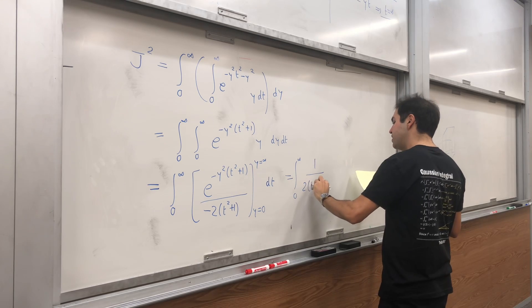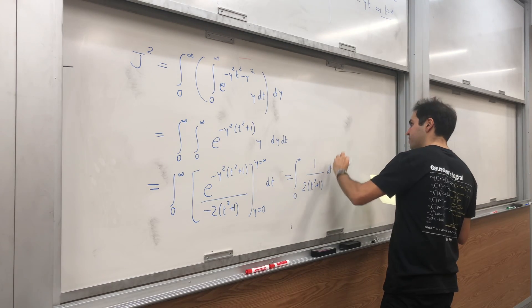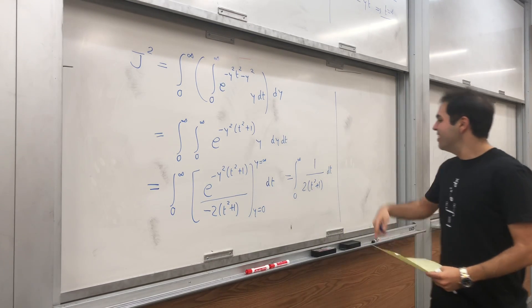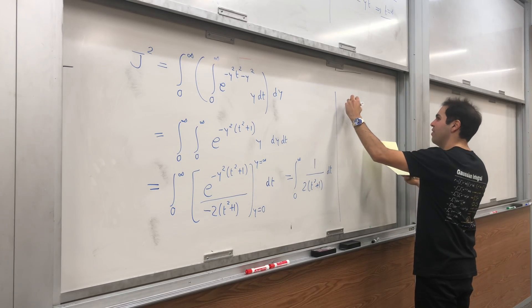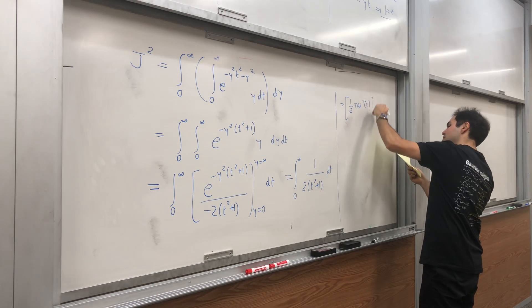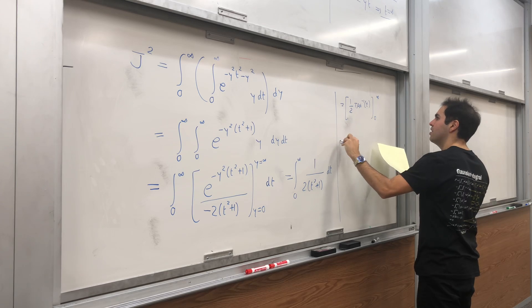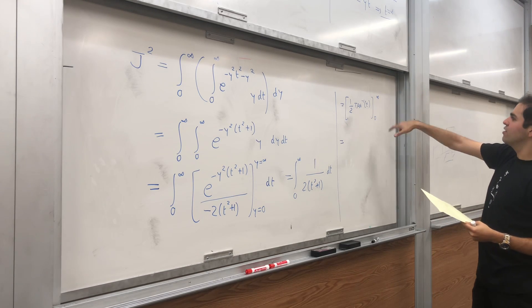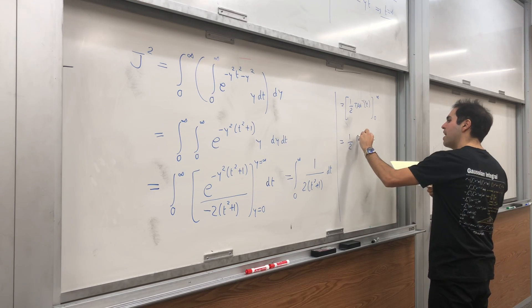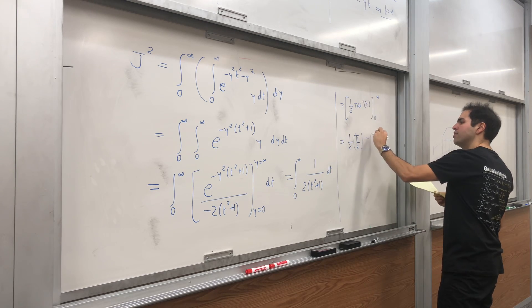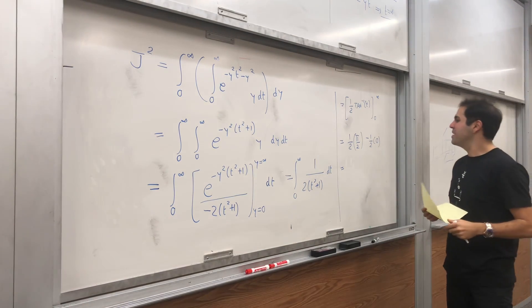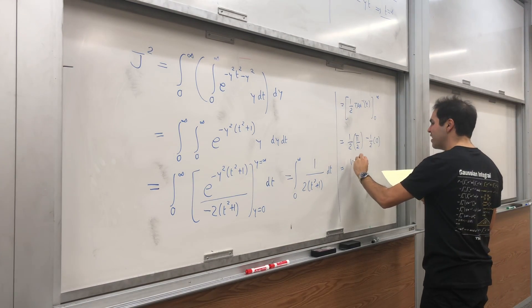The result of the inner integral is 1 over 2(t squared plus 1), leaving us with the integral from 0 to infinity of 1 over 2(t squared plus 1) dt. This is an integral we can evaluate — it's just arctangent. So this becomes one half times arctangent of t evaluated from 0 to infinity. Arctangent of infinity is pi over 2, so we get one half times pi over 2.